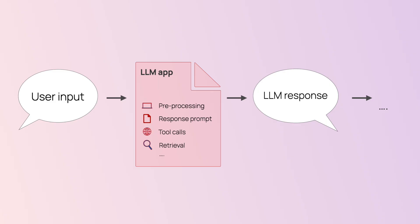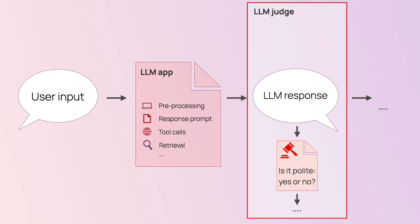Your main LLM product, like a chatbot, has a lot to do — it handles user inputs, keeps memory, uses tools, and follows complex instructions. The evaluator has one simpler job. For example, you can ask 'is this response respectful?' While the chatbot might get tricked by a malicious user, the evaluator just looks at the final text and can judge it by its merits.